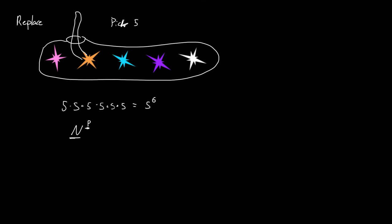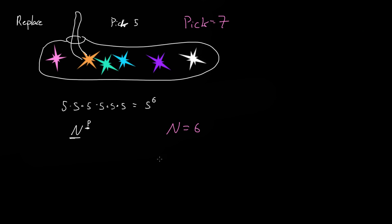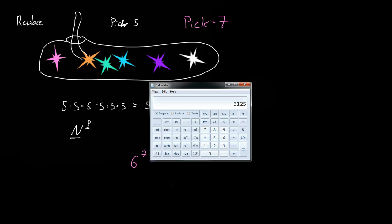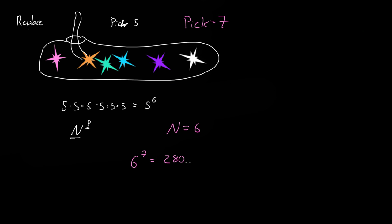So if we had maybe seven stars — well actually let's say six — then n would equal six. And let's say we pick seven times. The number of possible outcomes is just six to the power of seven, which equals two hundred and eighty thousand.